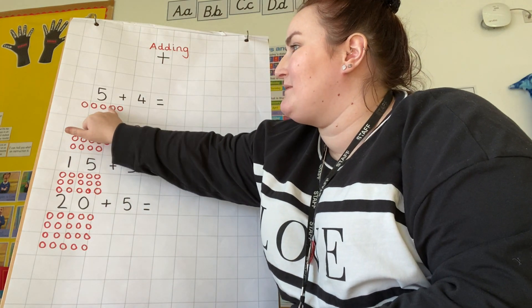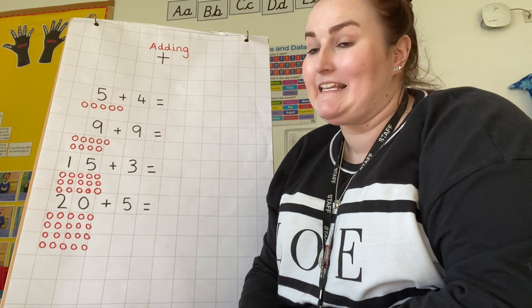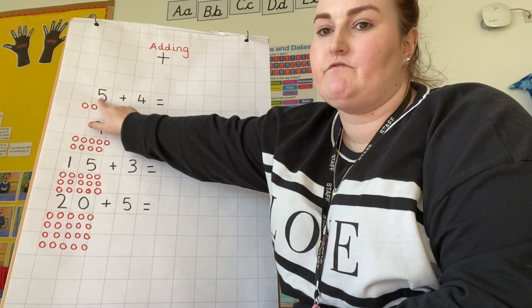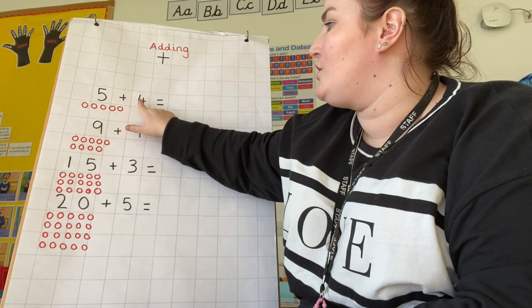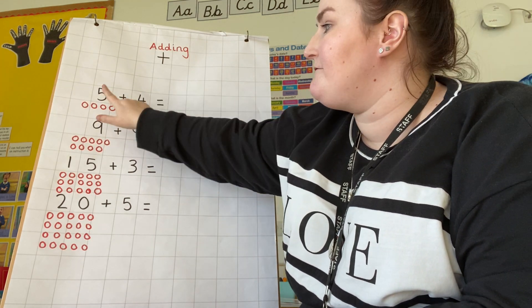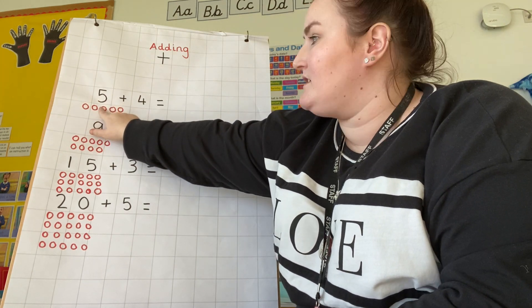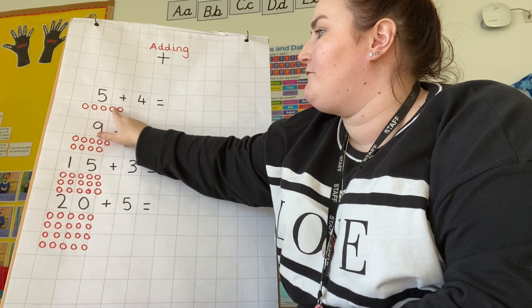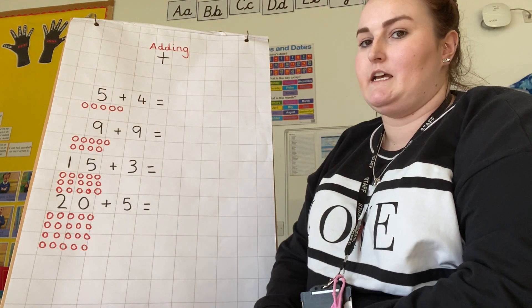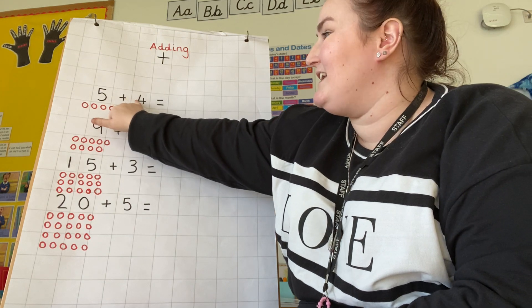When we're doing adding at the moment, we're still using pictures and things. I've just drawn some counters — they're easy to draw, easy to recognize, easy to count. My first number sentence reads: five add four equals. So my first job is to draw the amount I need first, which is five. One, two, three, four, five — I draw five counters.